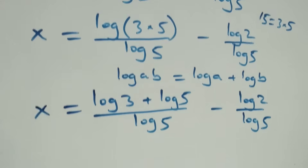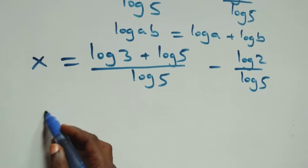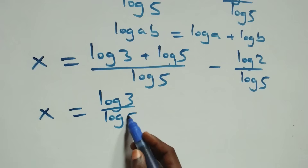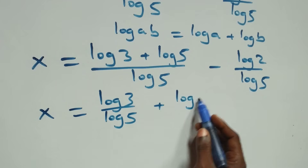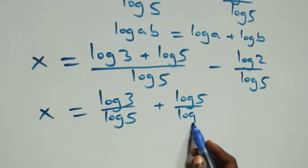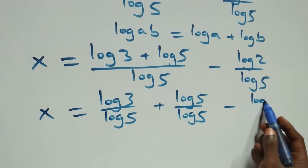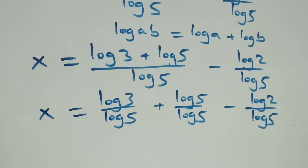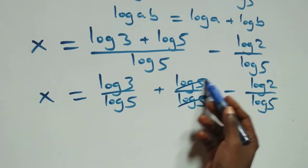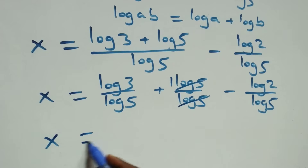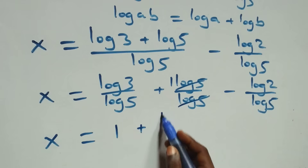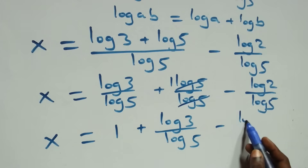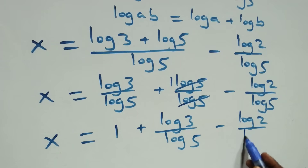We separate this into two fractions and we have x equals to log 3 over log 5, plus log 5 over log 5, minus log 2 over log 5. Log 5 over log 5 cancels each other to give 1, so x equals to 1 plus log 3 over log 5 minus log 2 over log 5.